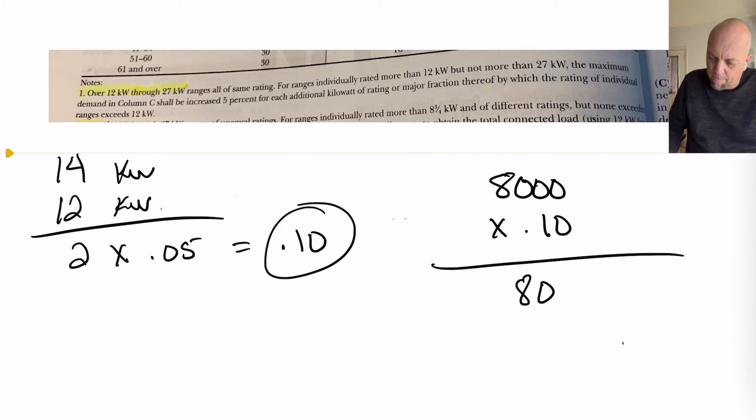And so, that will be 800. Don't stop there. Don't stop there. Think about this. If a 12kW range is 8,000, a 14kW range has got to be greater than 8,000.